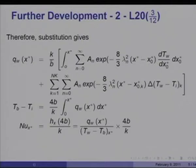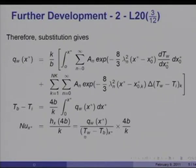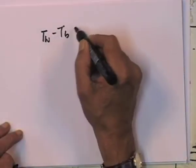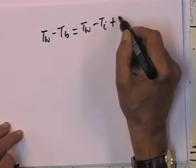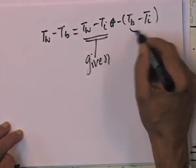Substituting that expression, the heat flux response to arbitrary variation of T_w along the wall gives q_w(x*) equal to (k/b) times the integral from 0 to x* of the sum from n=0 to infinity of the exponential function evaluated at (x* minus x_naught*), multiplied by (dT_w/dx_naught*) dx_naught*, plus the discontinuous part summed over steps k from 1 to N_k. This gives us the heat flux response and is what we have evaluated.